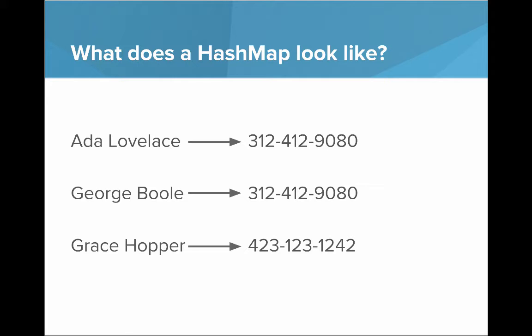So Ada Lovelace, we have an arrow to her number. George Boole, we have an arrow to his number. Grace Hopper, we have an arrow to her number. The idea is given a person's name, we can look up the corresponding value.